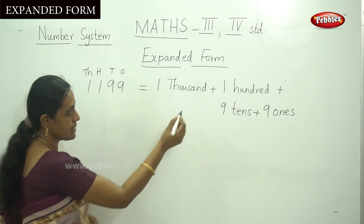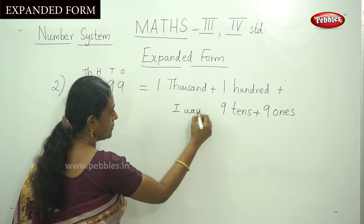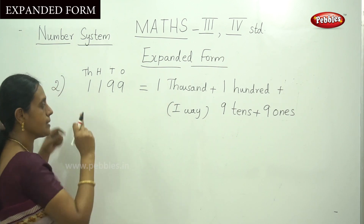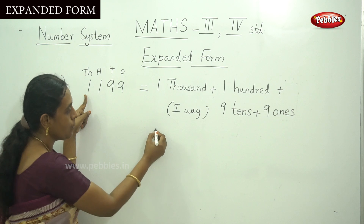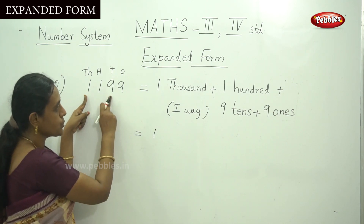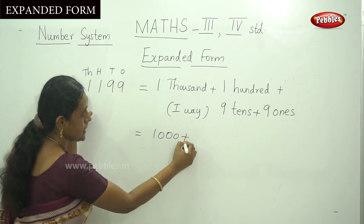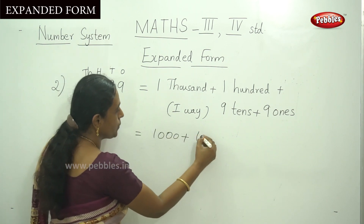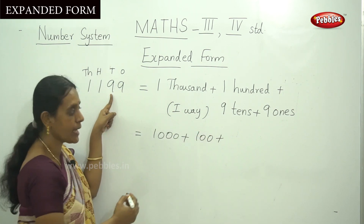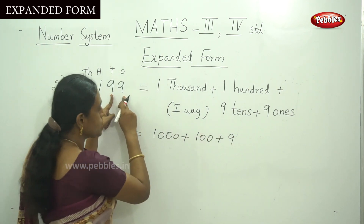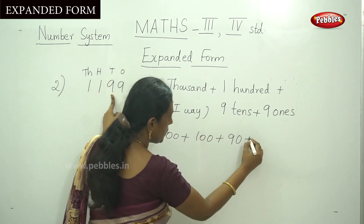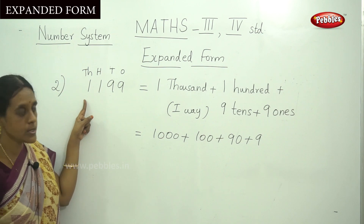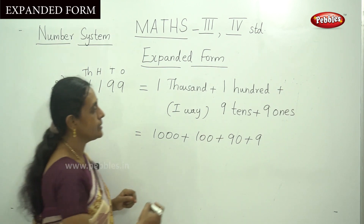Do you understand this? This is the first way of expanded form. And the second way: one thousand — here, listen — I have to write down this number first. One and how many zeros means one, two, three. Plus one hundred, so write down this number one and one two, two zeros. Plus the next number that is nine, and next number that is one digit, so put one zero. And the last one is simply nine. That is one thousand, one hundred and ninety nine. This is the second way.